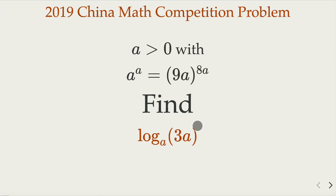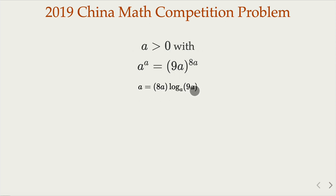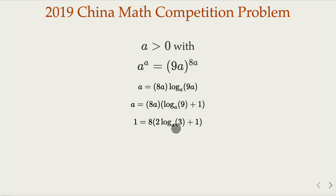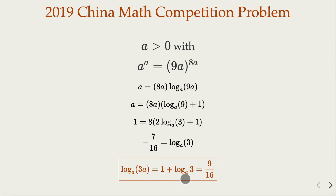Let's go back to the problem. The equation here can be solved using the properties we just reviewed. Since we're interested in log base a, let's take log on both sides. On the left-hand side, a raised to the a's power with base a becomes just a. If you take a log, the exponent becomes the product: 8a times the logarithm of 9a. Using the product property, log a of a equals 1. Dividing both sides by a gives 1 and 8, and you can solve — this value here is negative 7 over 16.